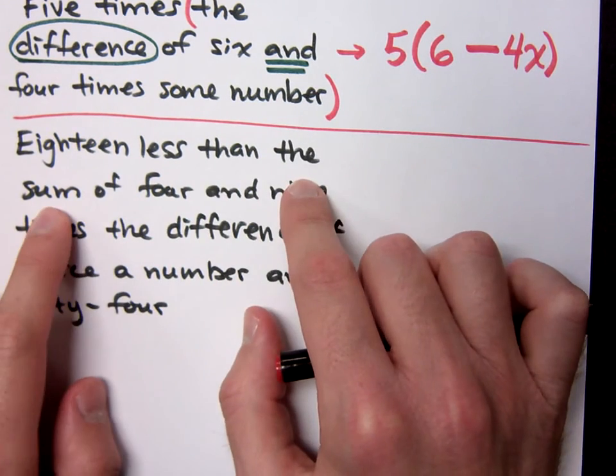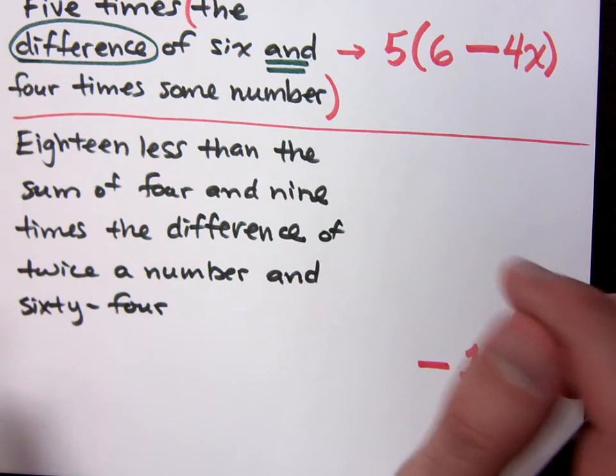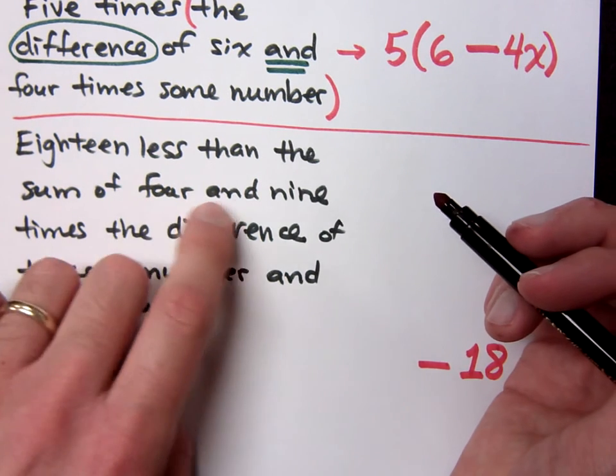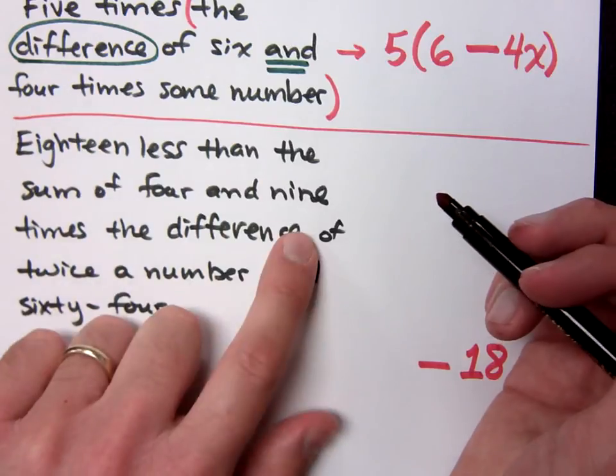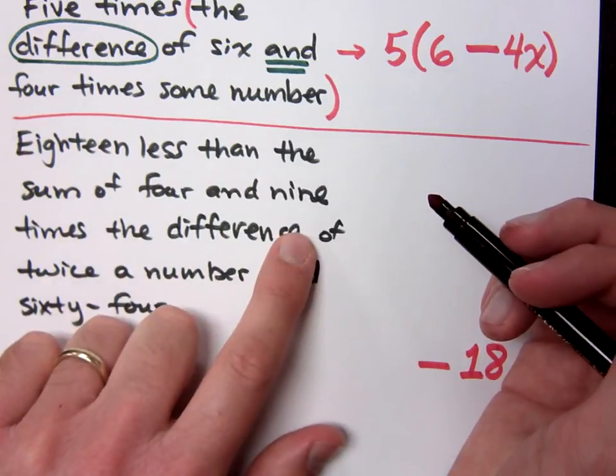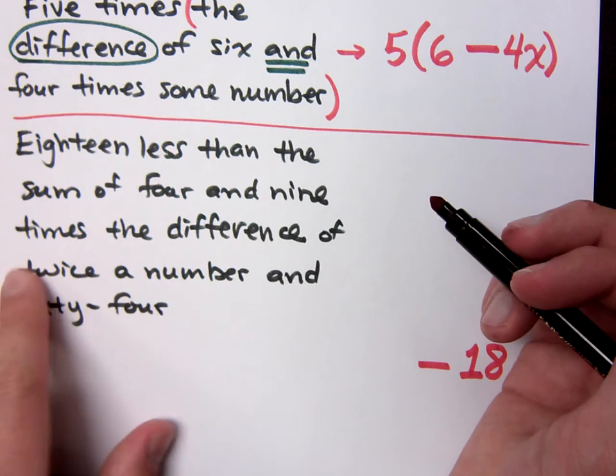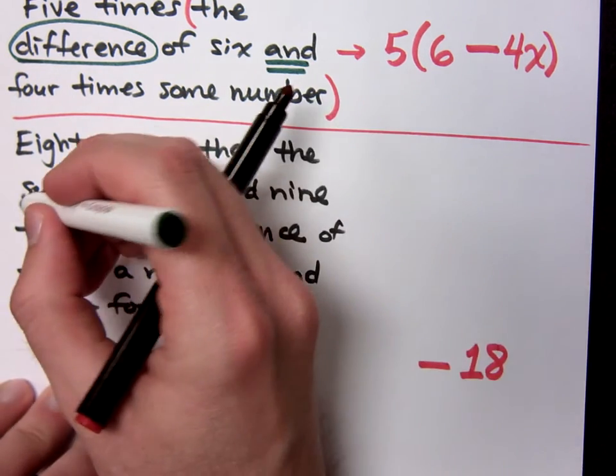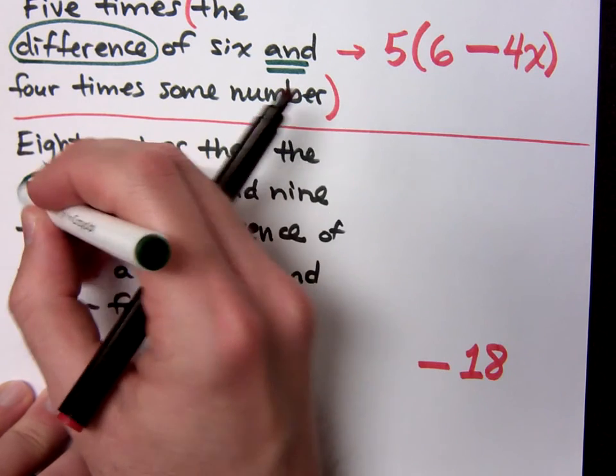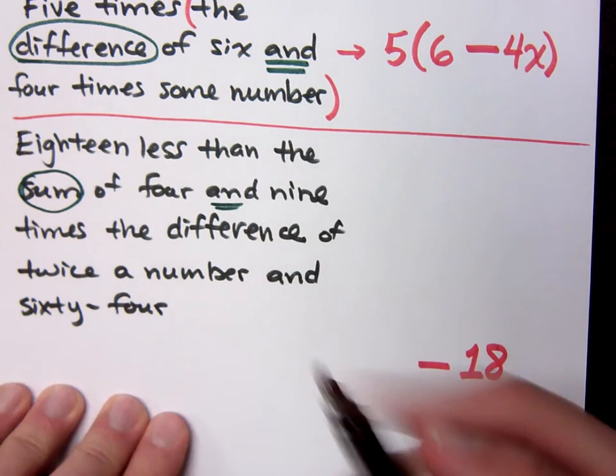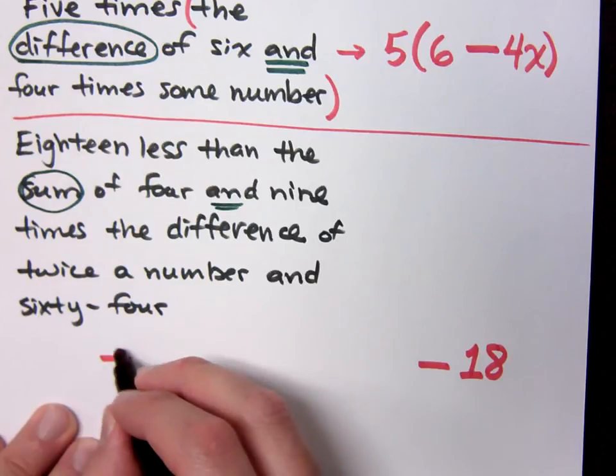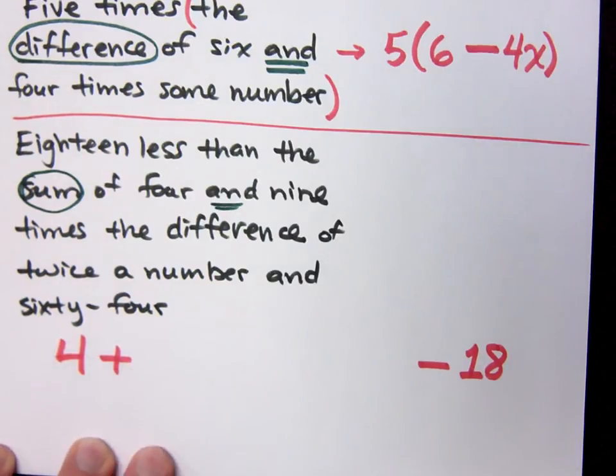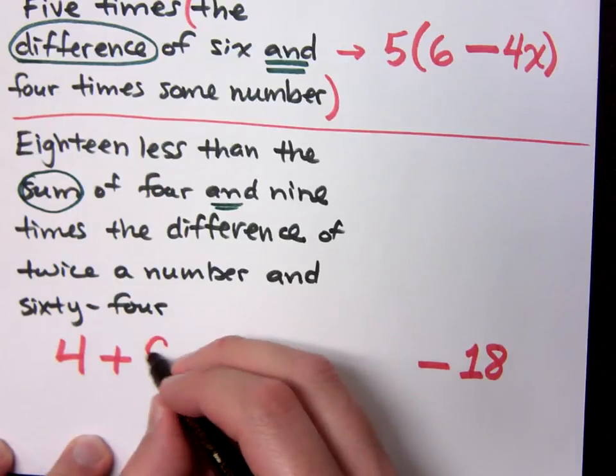The sum of what? Let's see. The sum of four and, well, it's not nine, right? It's nine times something. So this sum goes with this word, and. So I have the sum of four and what? Nine. Nine times what?